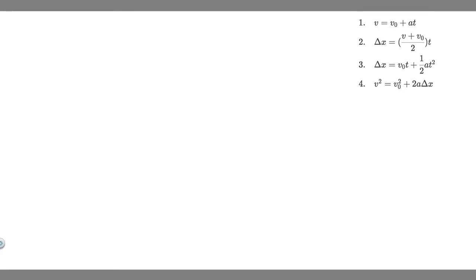In this problem, we're told a baseball is hit so that it travels straight upward after being struck by the bat. The fan observes that it takes 3 seconds for the ball to reach its maximum height. Find A, the ball's initial velocity, and B, the height it reaches.